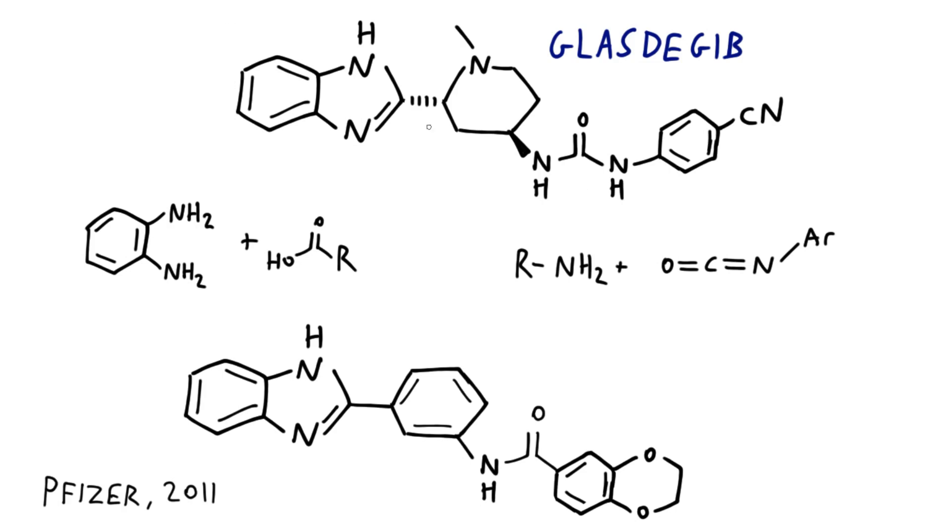Immediately on looking at this molecule, you can divide it into three obvious regions. There's the benzimidazole region on the left, and you could easily imagine making that by the condensation of orthophenylenediamine with the appropriate carboxylic acid.